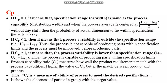Just by the value of CP you will be able to say whether the process is capable or not. If CP is greater than 1, the process variability is lower than the specification range, meaning the process is capable of producing parts within the specification limits. Therefore, CP greater than 1 is the desirable condition.